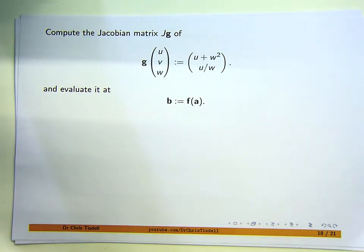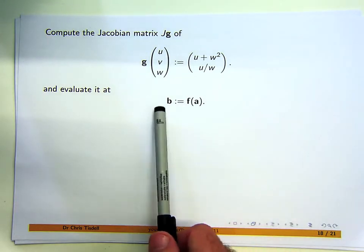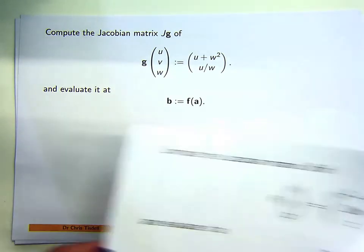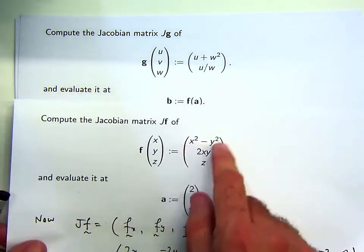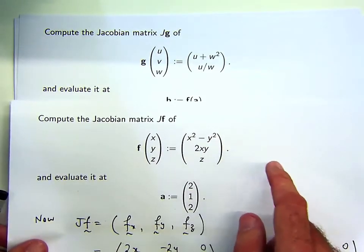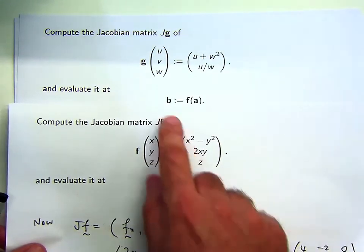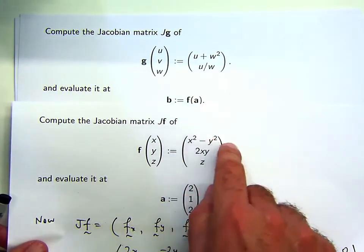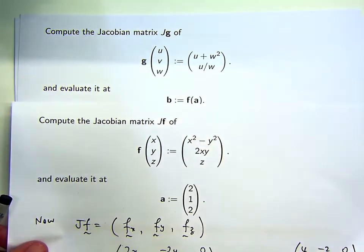Here's another example from several-variable calculus, vector calculus. We're given a vector-valued function g, and we're asked to evaluate it at the point associated with a vector b, where f and a are from a previous problem. To come up with b, we take a and plug it into f to get b.